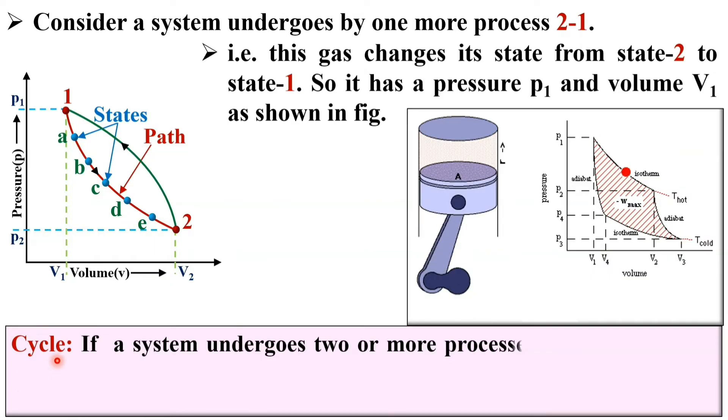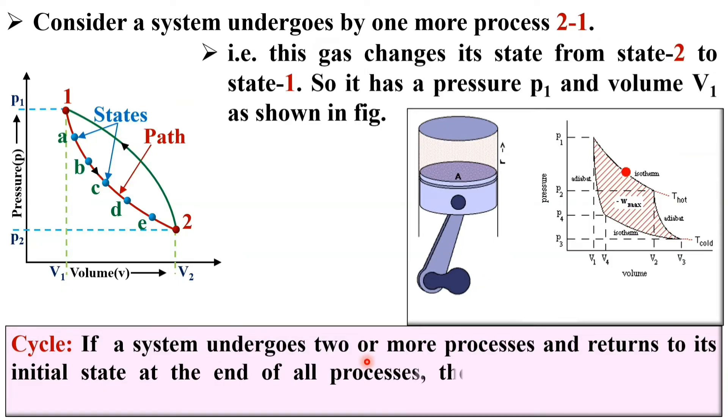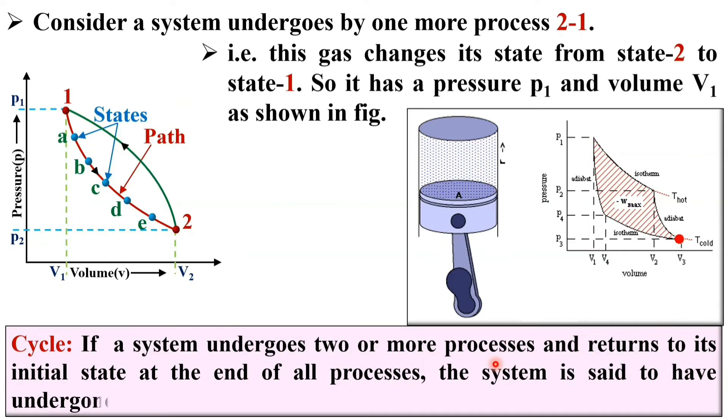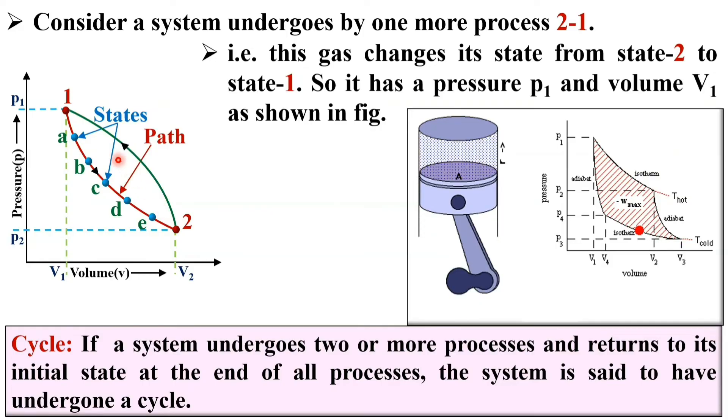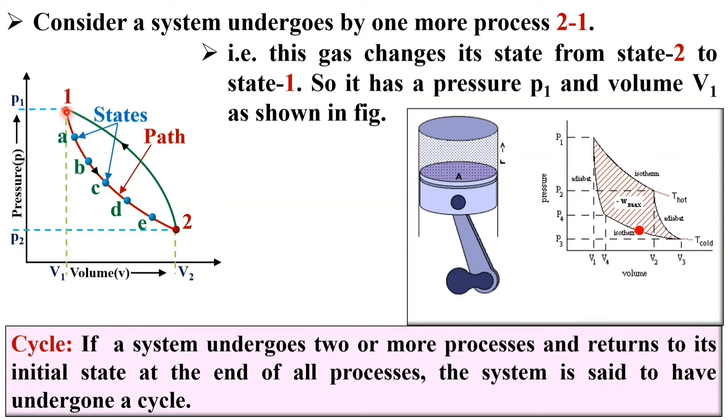If a system undergoes two or more processes, here you can see two processes and here you can see more than two processes, and returns to its initial state at the end of all processes. In this figure, this is the initial state and after all the processes, once again, it gains its original state.